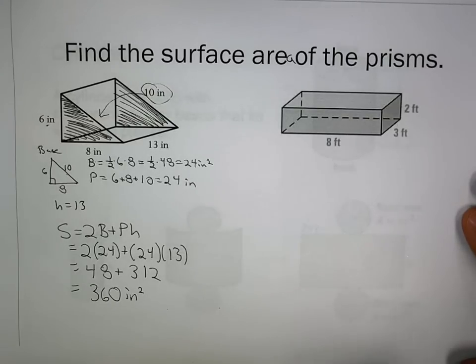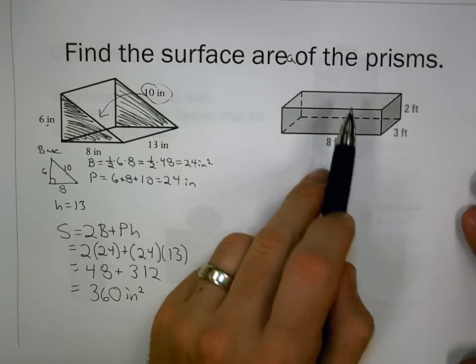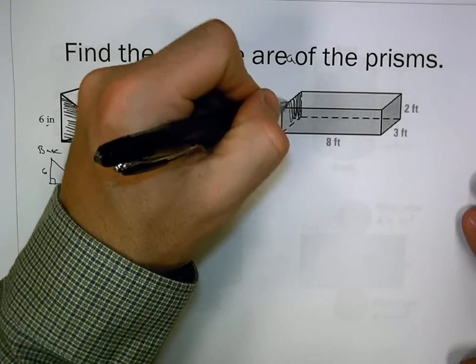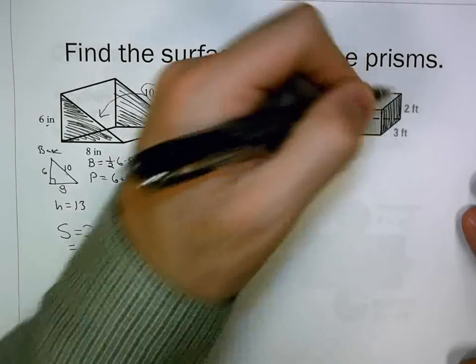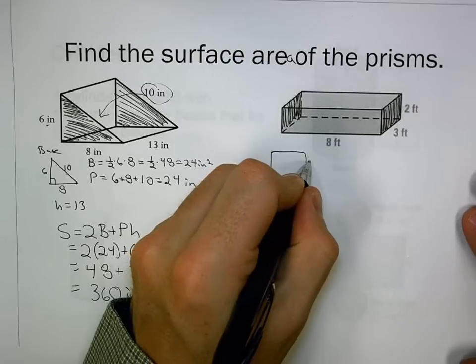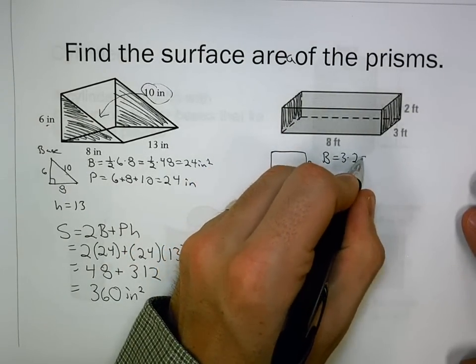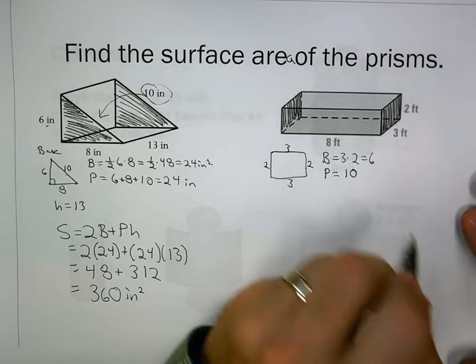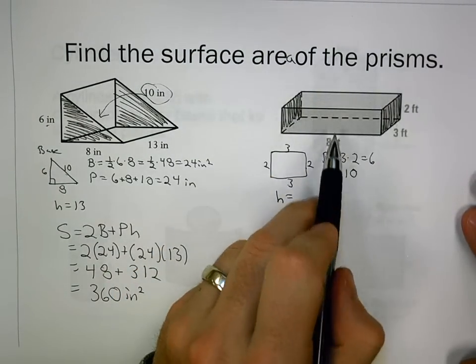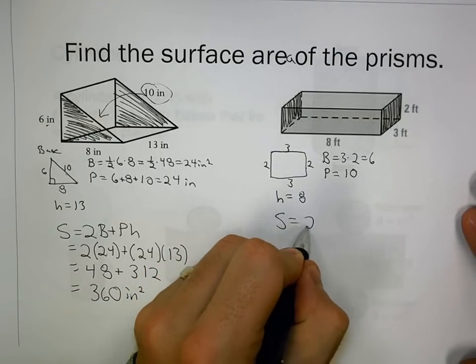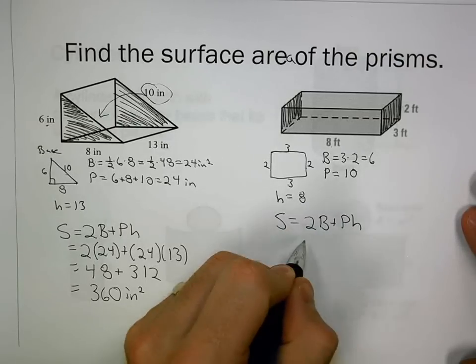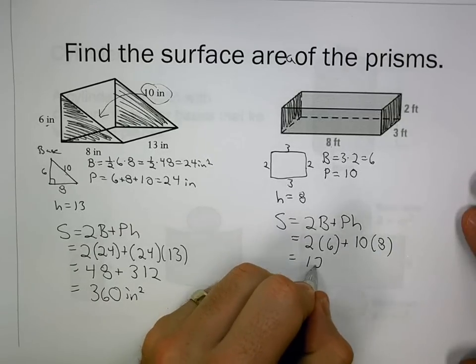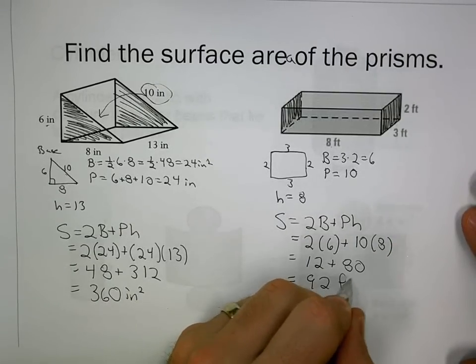For a rectangular prism, we have options for which are the bases. Let's say these are the bases we choose. My base area is 3 times 2 or 6. My perimeter is 3 plus 2 plus 3 plus 2, which is 10. The height is the distance between the bases, which is 8. Surface area is 2 times 6 plus 10 times 8, giving 12 plus 80, which is 92 feet squared.